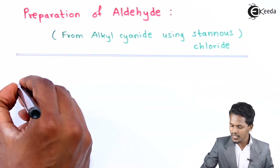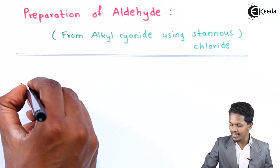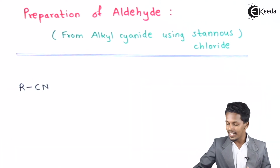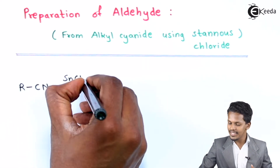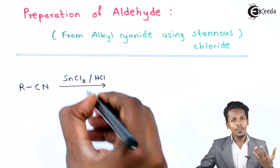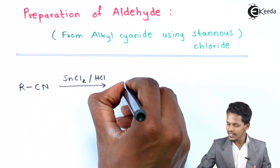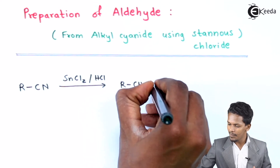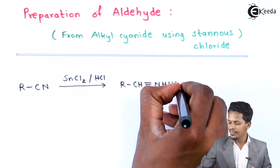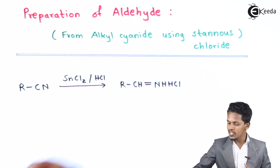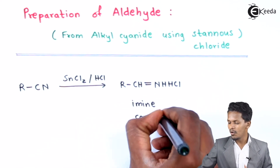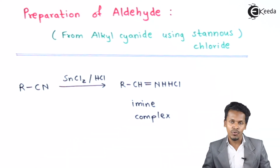Talking about the general reaction: suppose we have an alkyl cyanide that is R-CN, and suppose it undergoes a reaction with SnCl₂ along with dilute HCl. The product formed is R-CH=NH·HCl. This product is basically known as an imine complex or it can also be called imine hydrochloride.